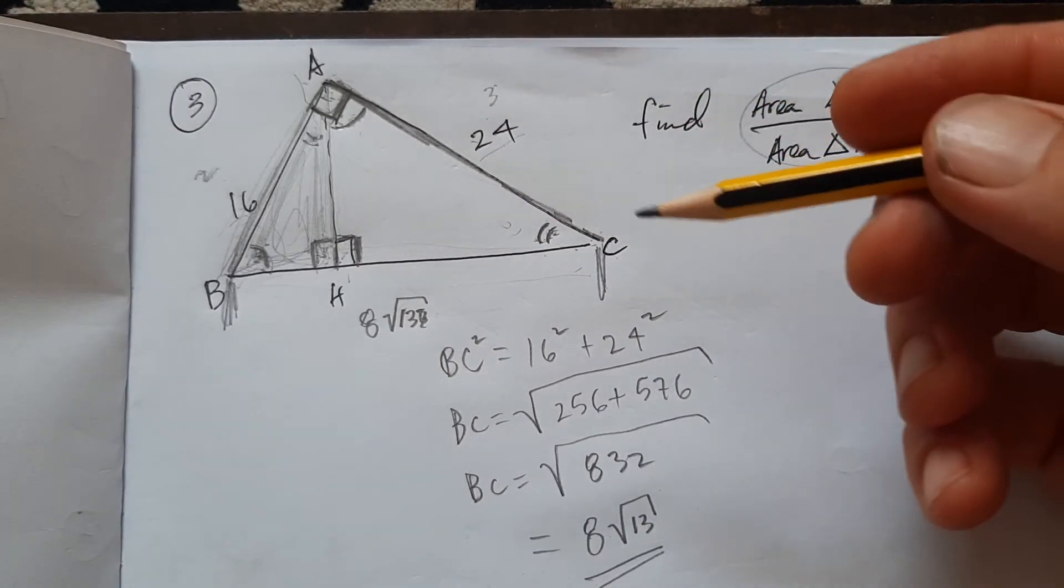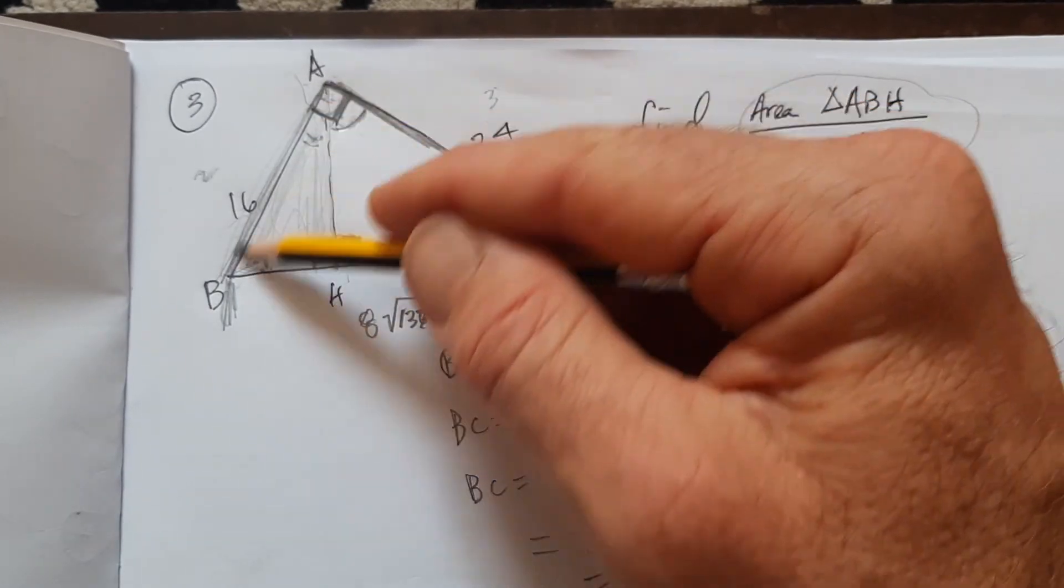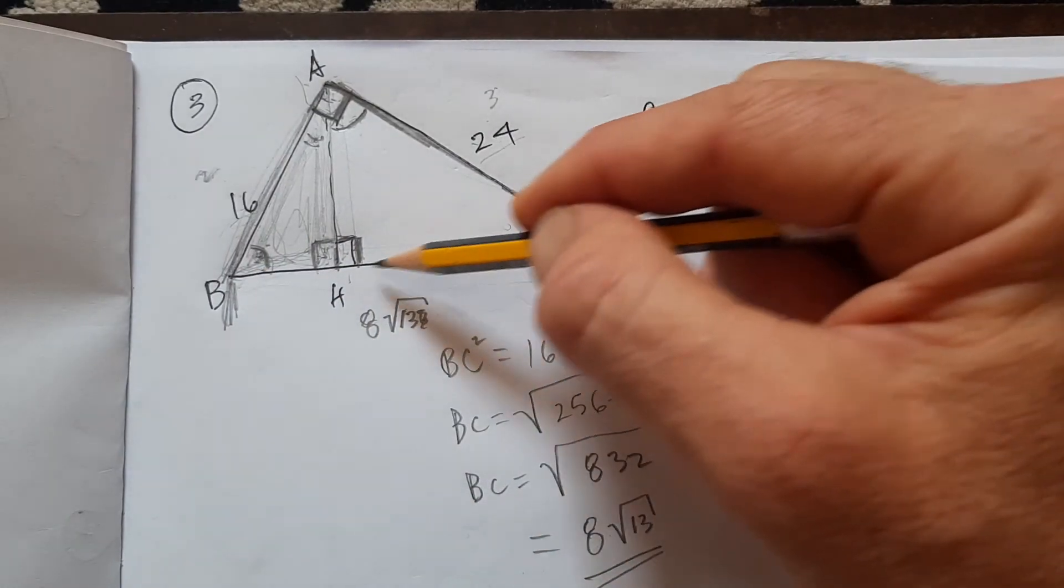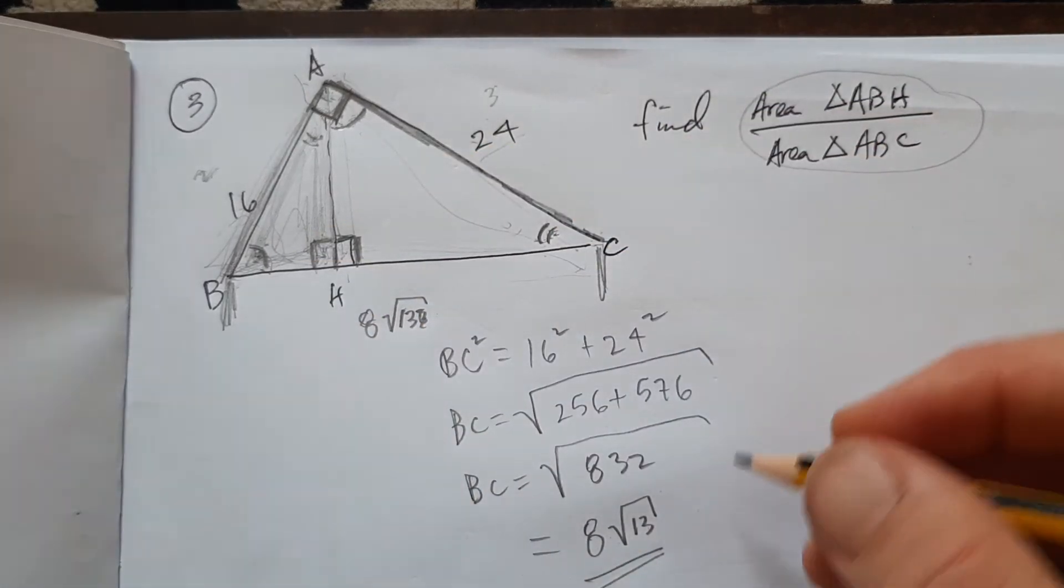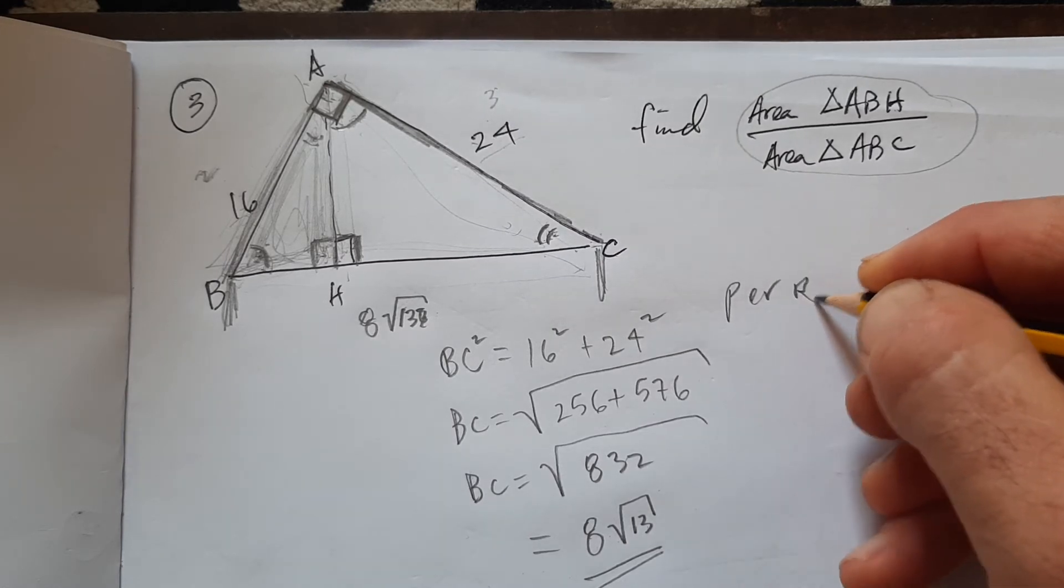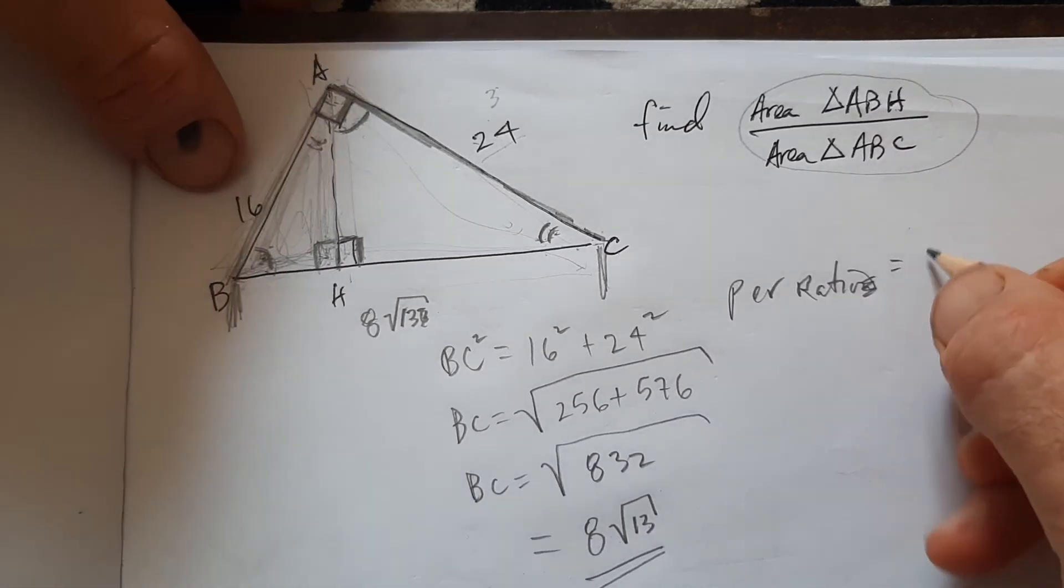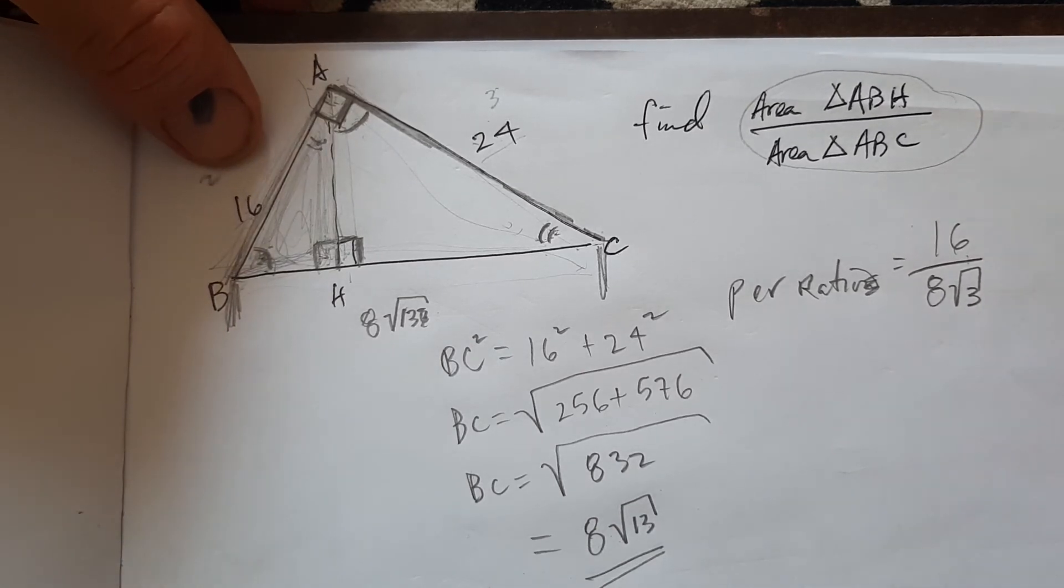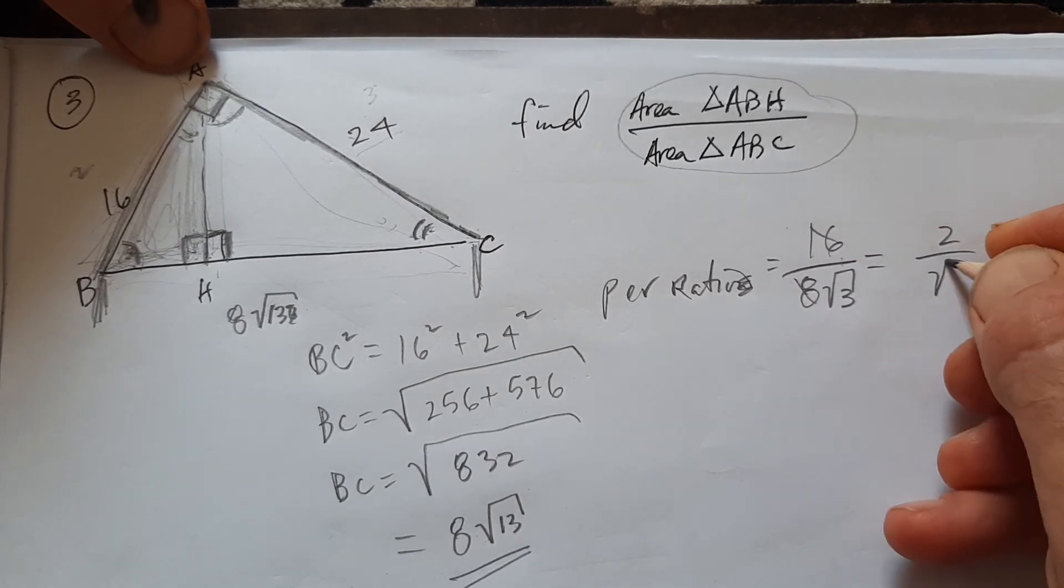So the ratio of my perimeters is, because I got this corresponding AB in triangle ABH, which corresponds to side BC in triangle CBA. So my ratio of perimeter, perimeter ratio from ABH to triangle ABC is 16 over 8 square root of 13. Let's go ahead and simplify that. It'll make our next calculation simpler. So this ratio is, divide that, I have 2 over the square root of 13.